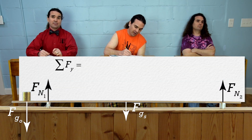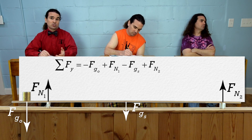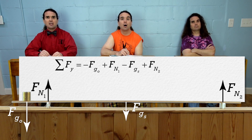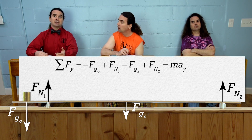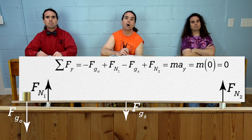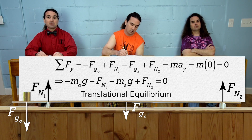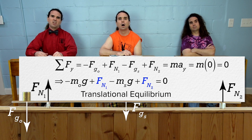The net force in the y direction on the meter stick equals the force of gravity acting on the object, which is negative because it is down, plus force normal one, which is positive because it's up, minus the force of gravity acting on the meter stick, plus force normal two, which is also positive because it is up. This equals the mass of the meter stick times the acceleration in the y direction. However, the meter stick is at rest, so its acceleration in the y direction equals zero — it is in translational equilibrium. We can substitute mass times acceleration due to gravity for both forces of gravity. But we don't know either force normal, so this is one equation with two unknowns, which we cannot currently solve.